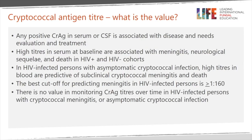To summarize: any positive CrAg in the serum, plasma, or CSF is associated with disease and needs evaluation and consideration of treatment. High titers in the serum at baseline are associated with meningitis, neurologic sequelae, and death in both HIV-infected and HIV-uninfected cohorts. In HIV-infected persons with asymptomatic cryptococcal antigenemia, high titers in the blood are predictive of subclinical meningitis and death. The best cutoff for predicting meningitis in HIV-infected persons is a titer of 1 to 160 or greater. There is no value in monitoring CrAg titers over time in HIV-infected persons with cryptococcal meningitis or asymptomatic cryptococcal infection.